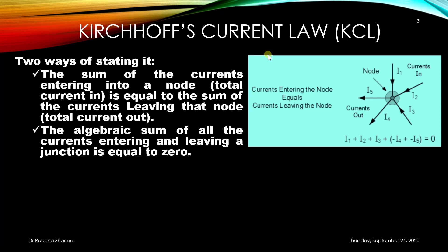The sum of currents entering into a node — that is, the total current in — is equal to the sum of currents leaving that node, meaning the total current out. It can also be explained as the algebraic sum of all currents entering and leaving a junction is equal to zero.